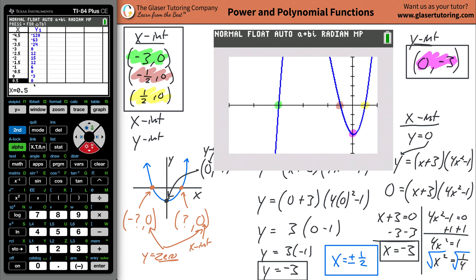When x is positive 1/2, what's y? Zero. When x is zero, what's going to be y? Negative three. That's what we said. There's so many ways you can do this.